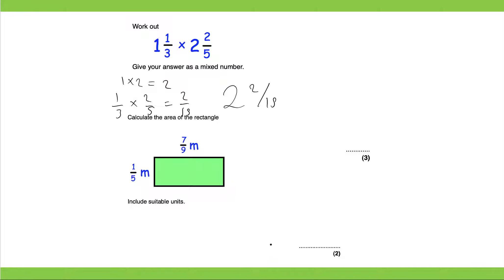Calculate the area of the rectangle including suitable units. So our units are meters. So let's just put that on so we don't forget. Now remember the area of the rectangle is the length multiplied by the width.